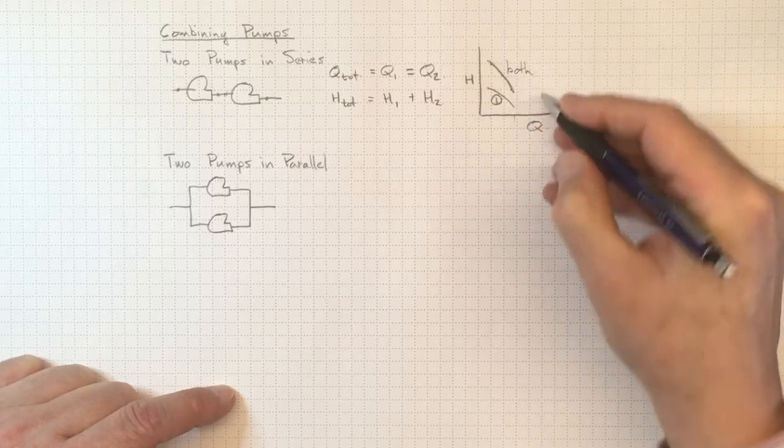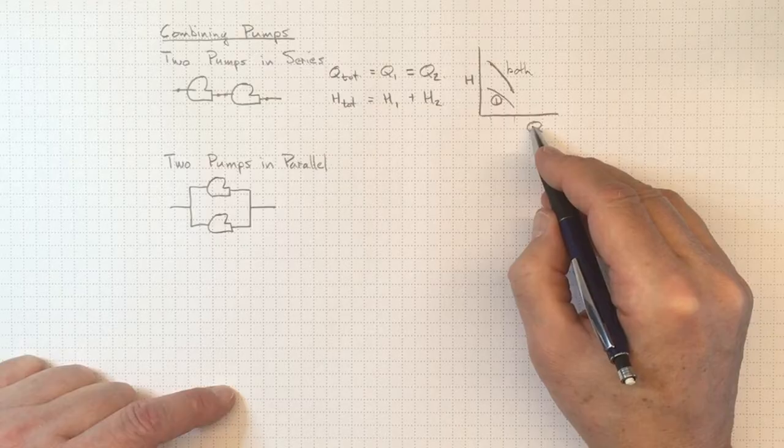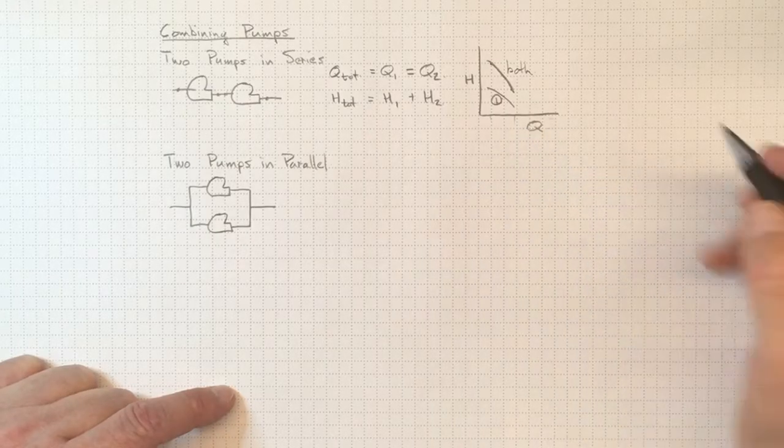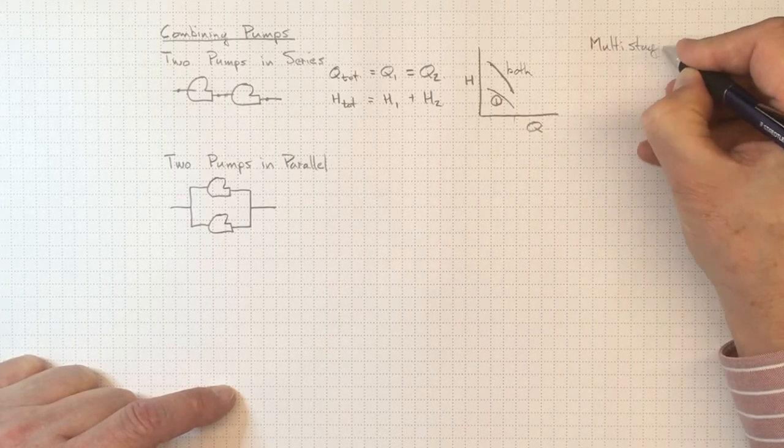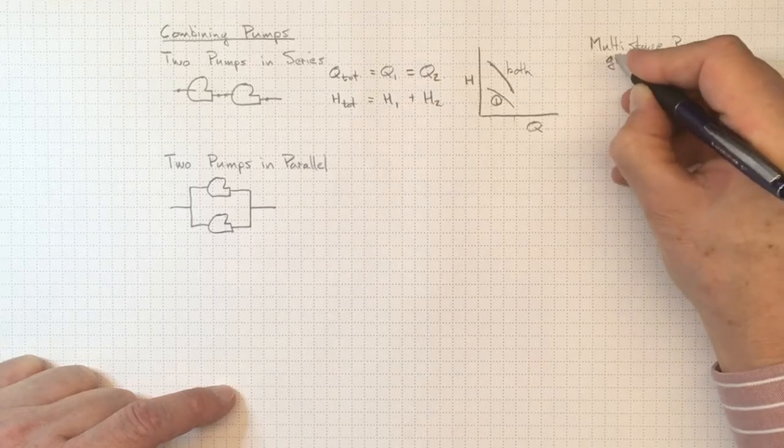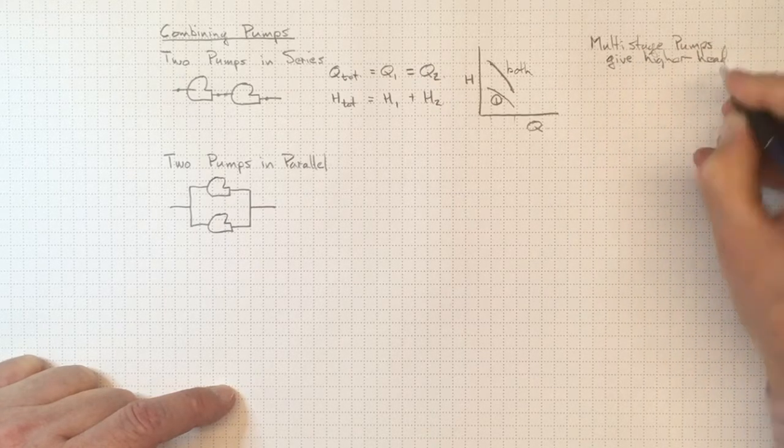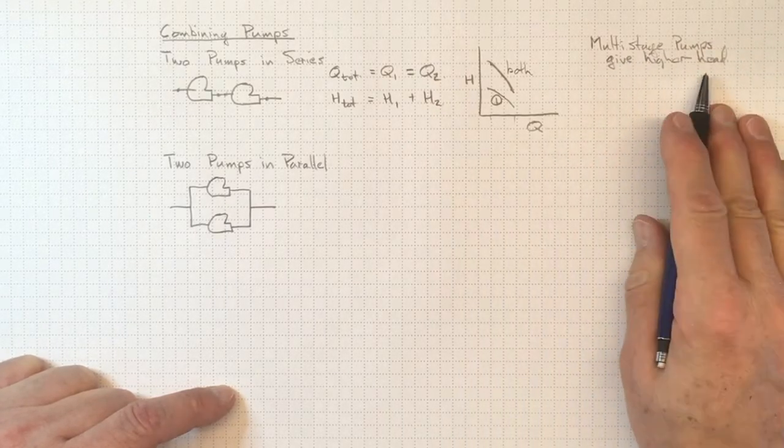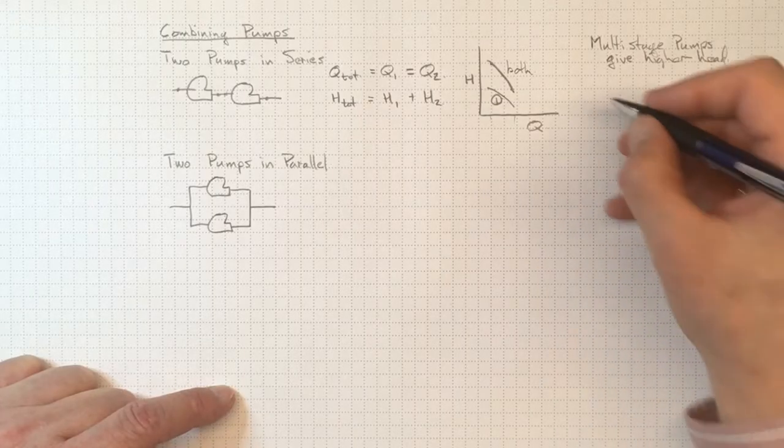So if I've got both of them, I've got higher head for the same flow. And we actually exploit this approach in multi-stage pumps. Multi-stage pumps give us higher head because they're basically multiple pumps in the same casing.